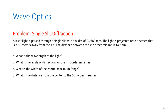The problem states that a laser light is passed through a single slit with a width of 0.0780 millimeters. The light is projected onto a screen that is 3.10 meters away from the slit. The distance between the fourth order minima is 14.3 centimeters. We are asked to find the wavelength of the light, the angle of diffraction for the first order minima, the width of the central maximum fringe, and the distance from the center to the fifth order maxima.